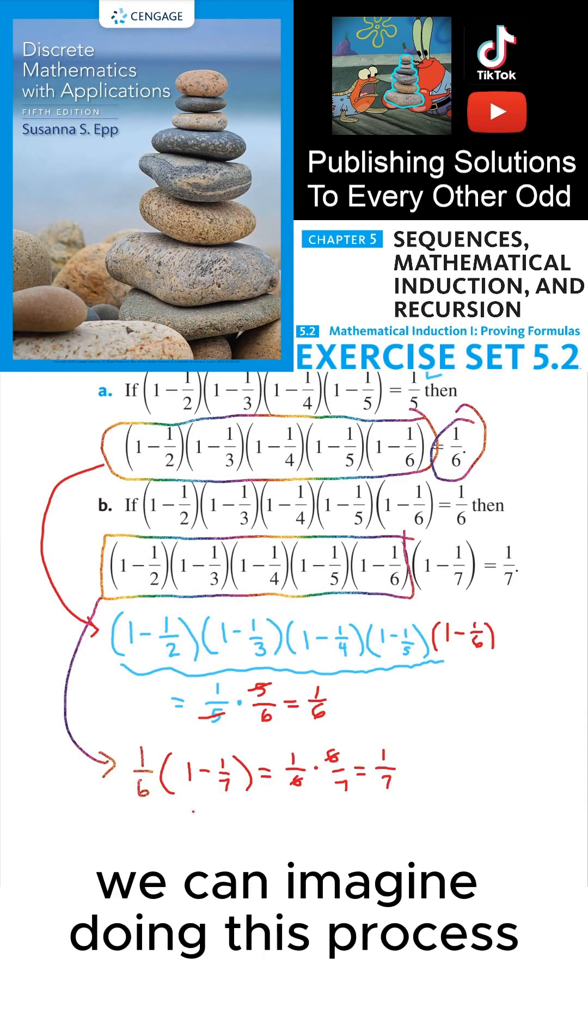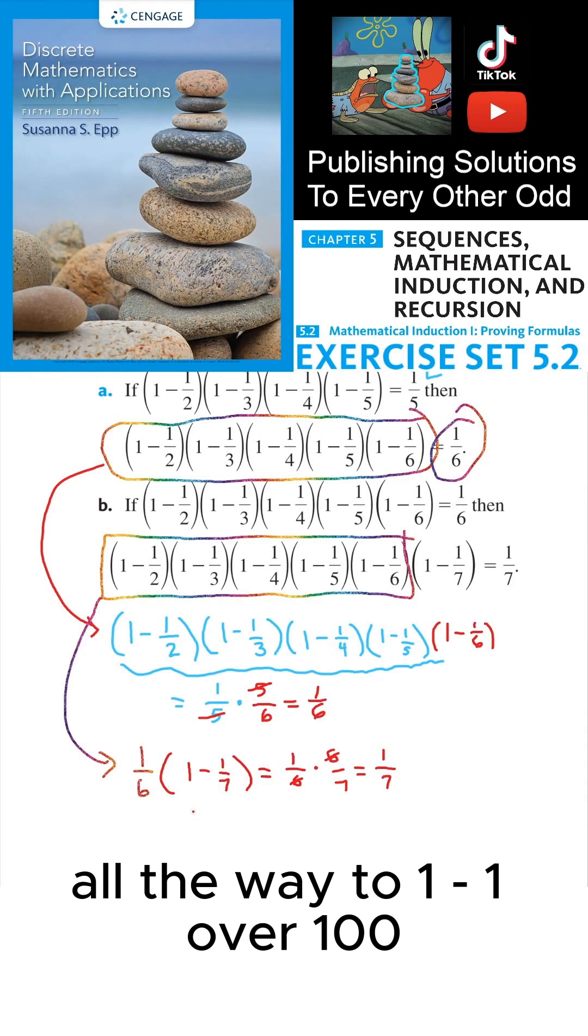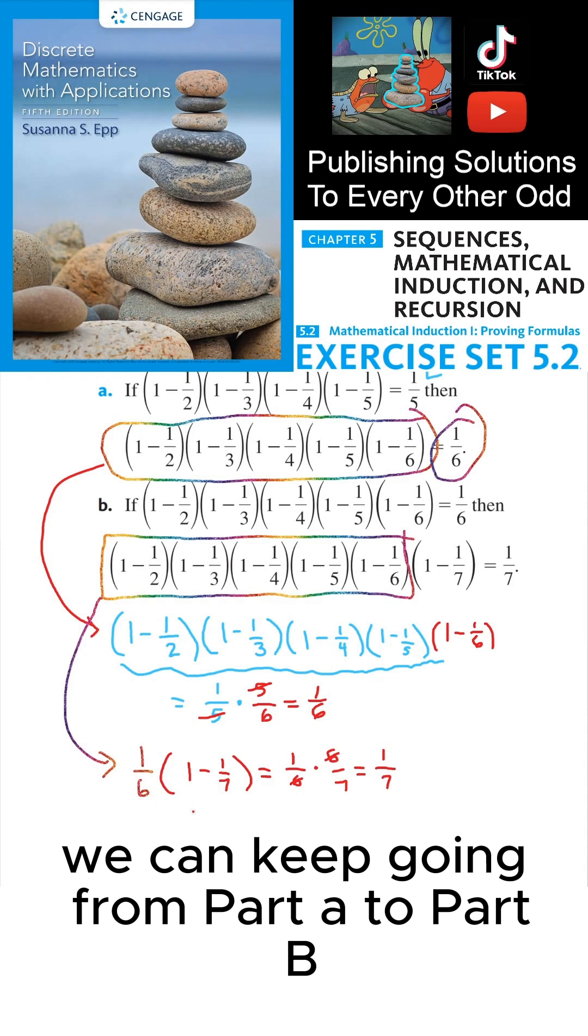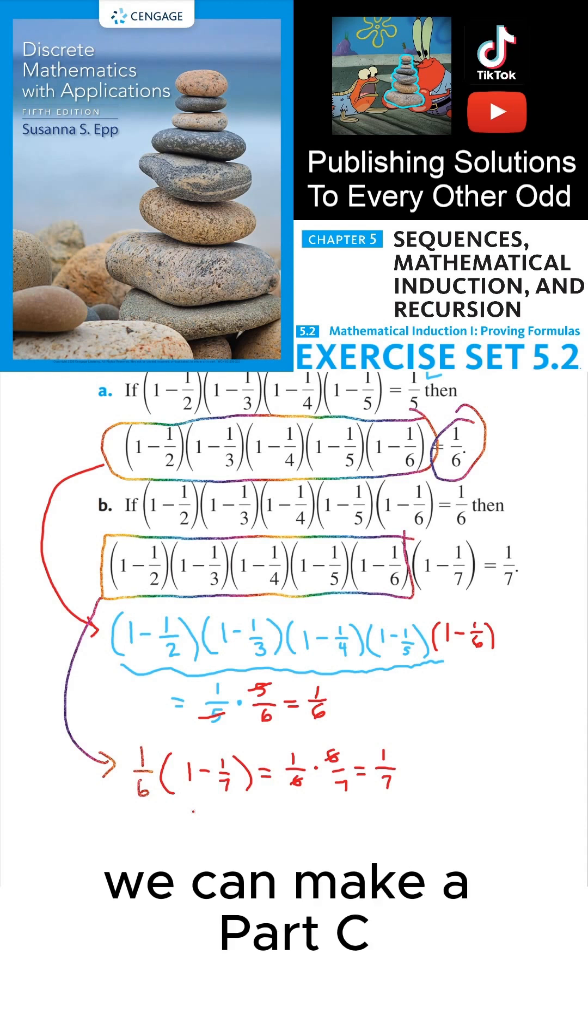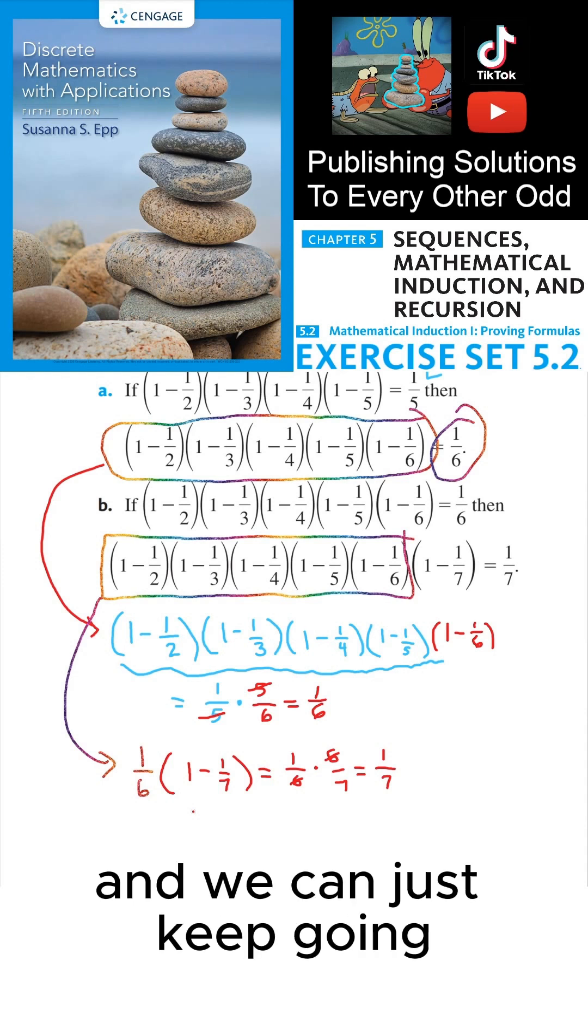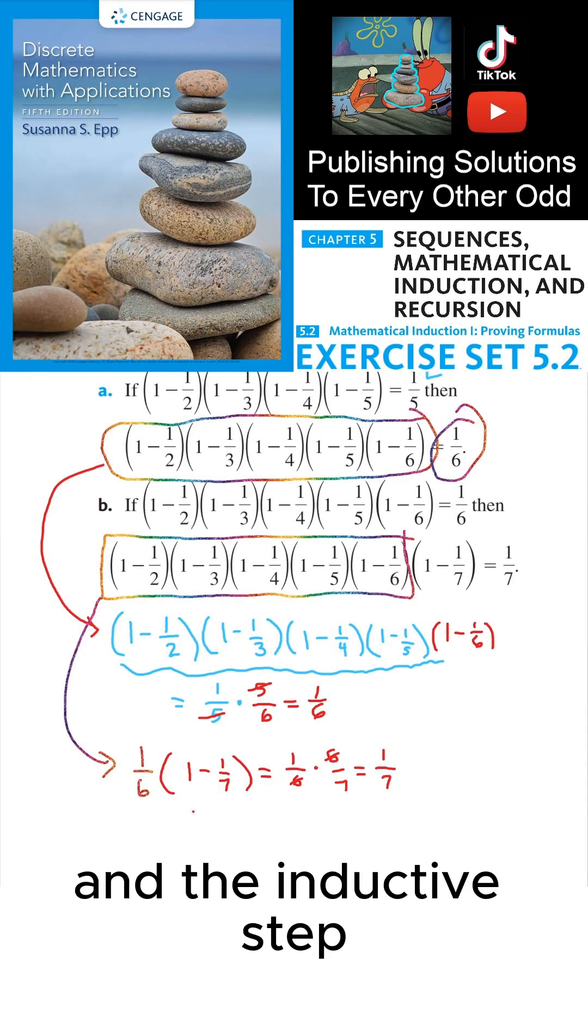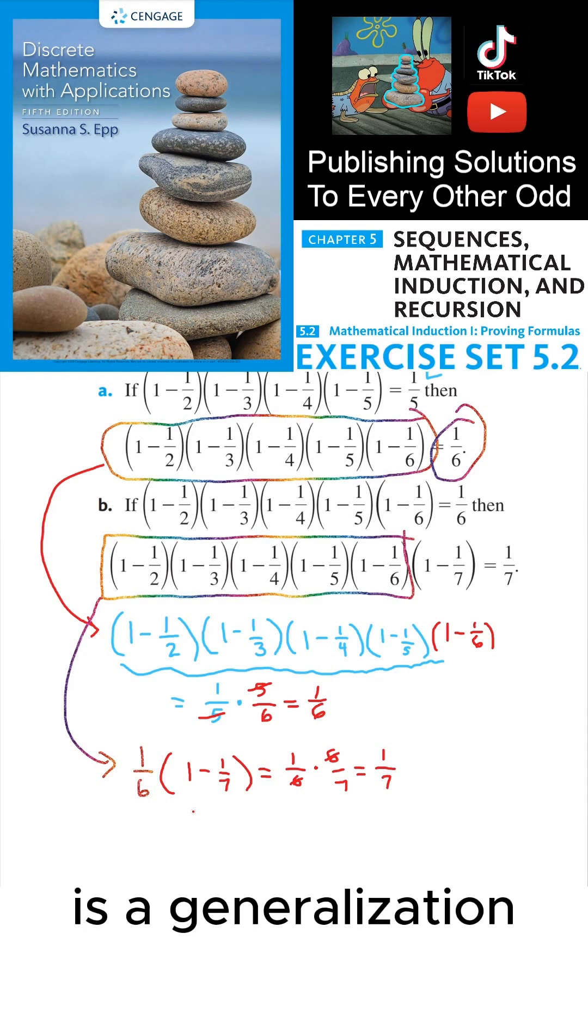We can imagine doing this process all the way to (1 minus 1/100) or (1 minus 1/1000). We can keep going from part A to part B. We can make a part C. We can make a part D. And we can just keep going.